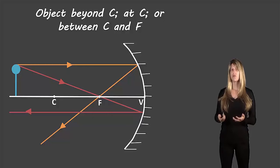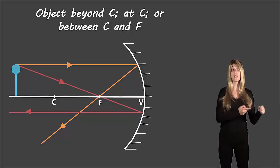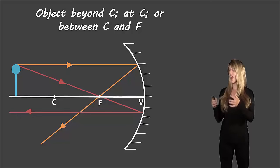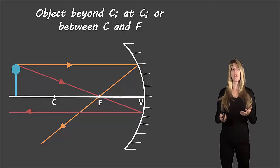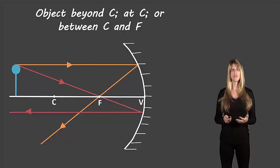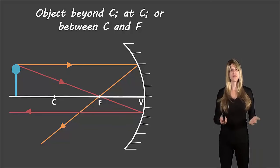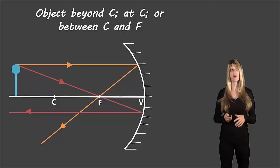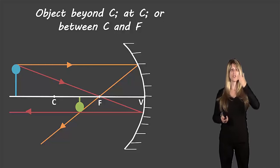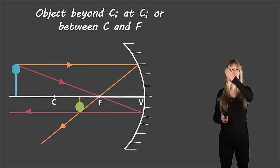If we look at the reflected rays — the ones that bounce off the mirror — they cross each other about halfway between C and F. We started drawing our lines at the top of the balloon, which means where those lines cross is the top of the balloon for our image. We always start at the top of our object, so that crossing point marks the top of the image. The stem of the balloon was a vertical line down to the principal axis, so our image stem goes toward the principal axis as well.